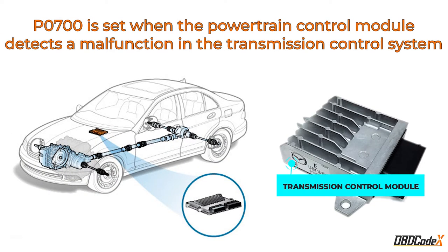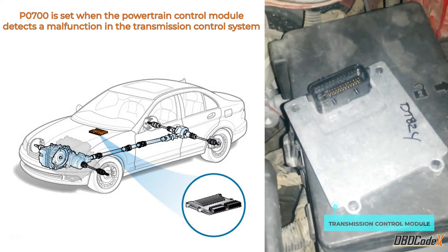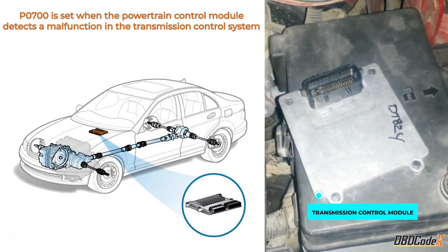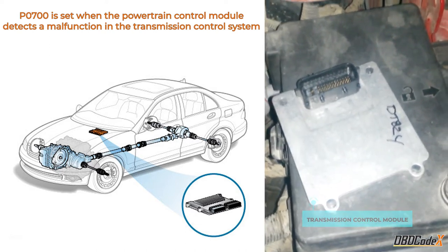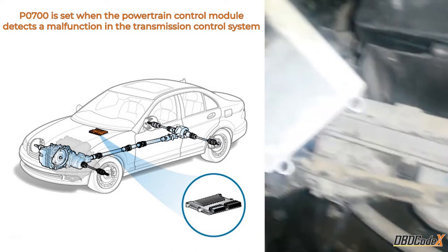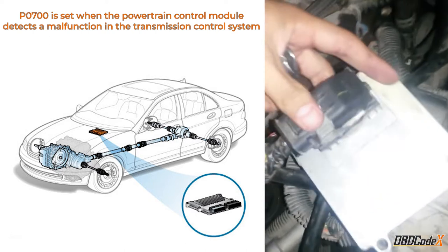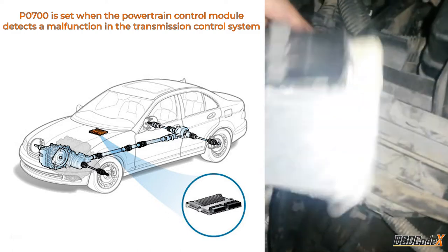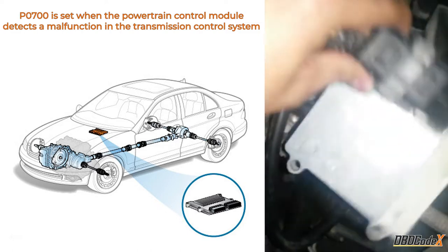P0700 is set when the powertrain control module detects a malfunction in the transmission control system. P0700 is an informational code only — it doesn't point to a direct fault in the engine, only a general fault in the transmission.